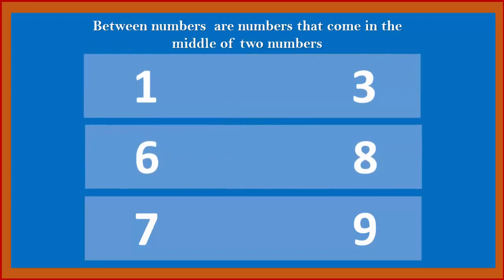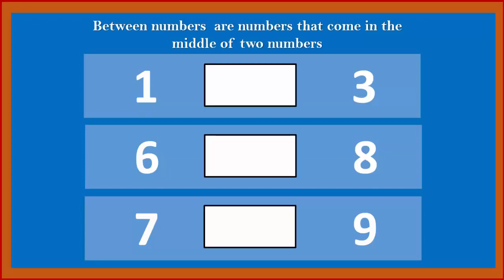Here are three examples. In the first example, there are the numbers 1 and 3. In the second example, there are numbers 6 and 8. In the third example, there are numbers 7 and 9. Did you notice that there are blank spaces between two numbers in each example? The numbers that will come in these spaces are called between numbers.